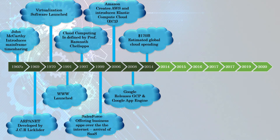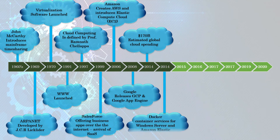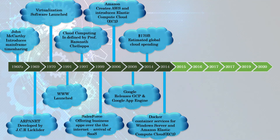On October 15, 2014, Microsoft announced the integration of the Docker engine into Windows Server, as well as native support for the Docker client in Windows. And in November 2014, Docker container services were announced for the Amazon Elastic Compute Cloud, EC2.